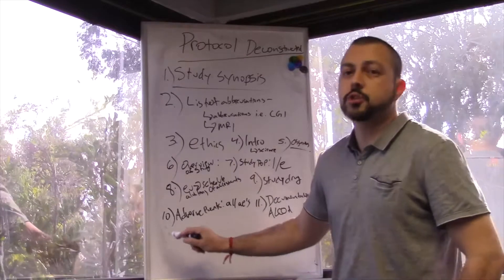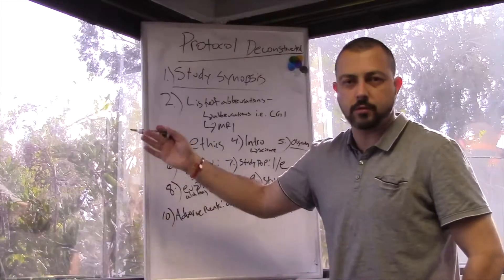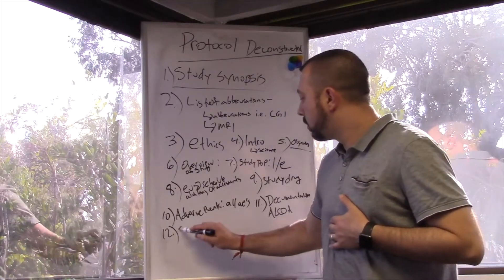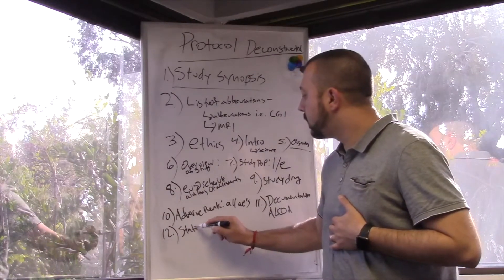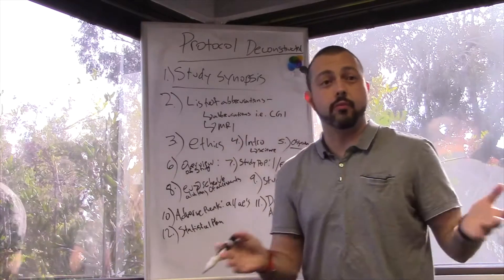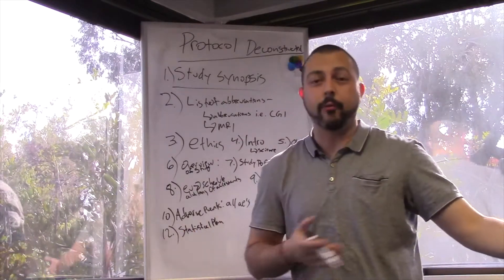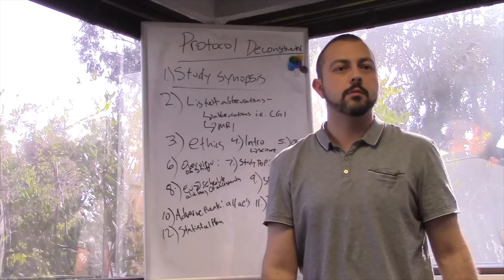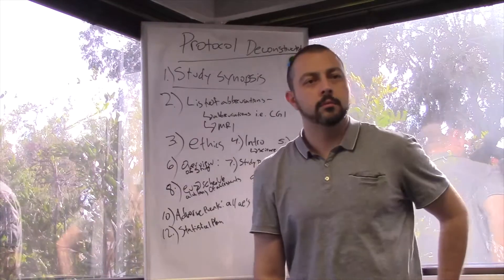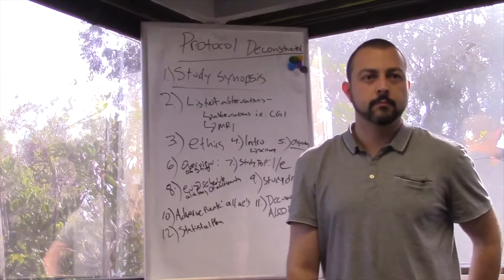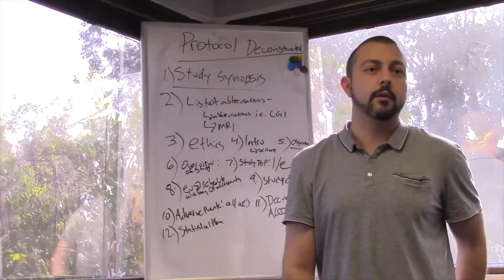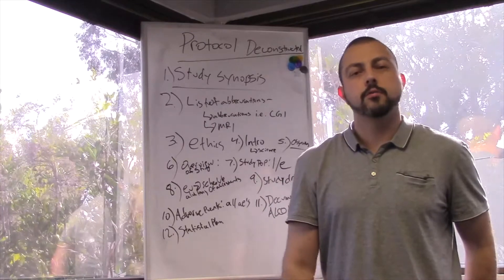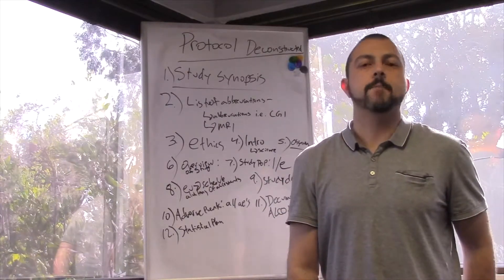Next, statistical and analytical plan, which basically no one needs to know. We're keeping it real with you guys. No one needs to know this unless you're a statistician. I would say if you're a CRA, you should always read the entire protocol once. Good disclaimer. But really, you probably could do without reading this part, but you still should read it because you never know what might be buried in here that you do need to know.